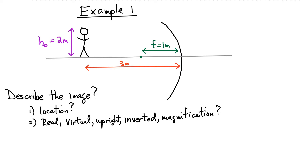Here's problem one. I'm standing in front of a concave mirror, three meters in front of it, and the focal distance of that mirror is one meter. I have a height of approximately two meters. The questions are: locate the image, and describe it — is it a real image or virtual image? Is it upright or inverted, and how big is it?